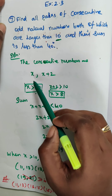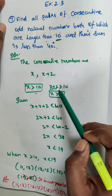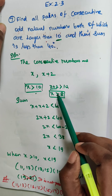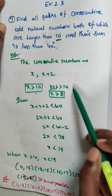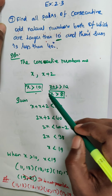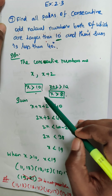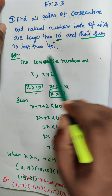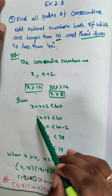Since x plus 2 is greater than 10, we get x is greater than 10 minus 2, that is x is greater than 8.